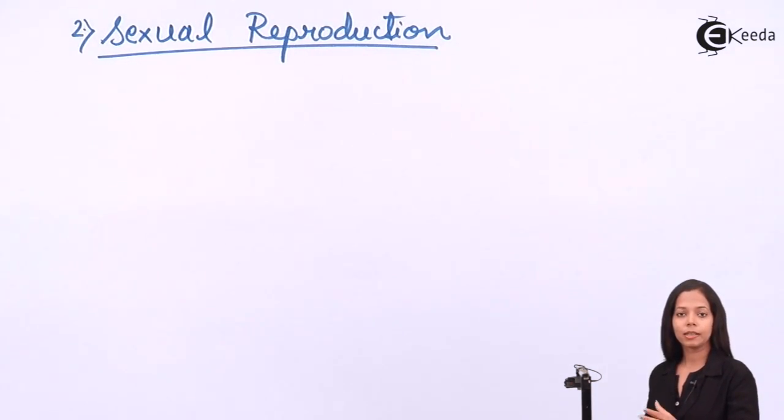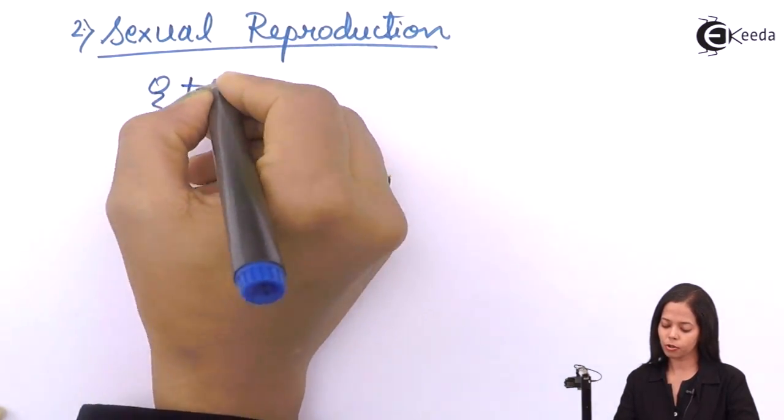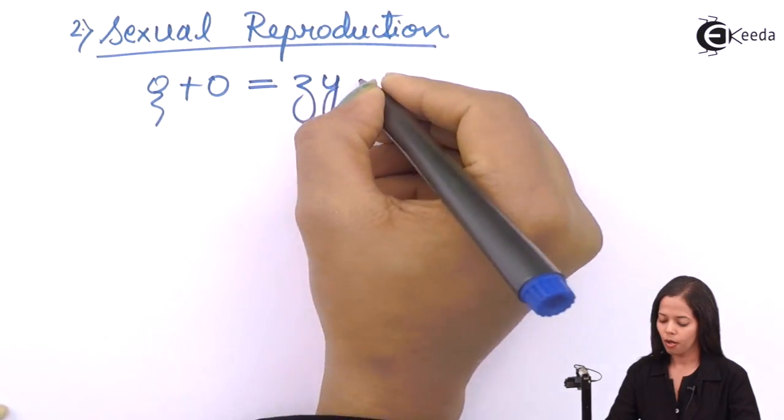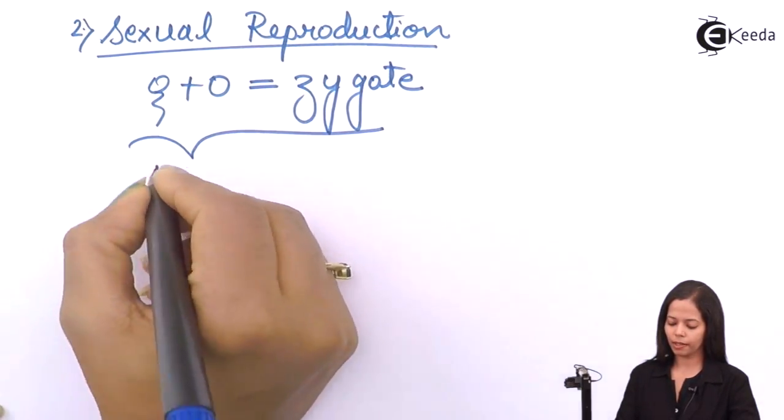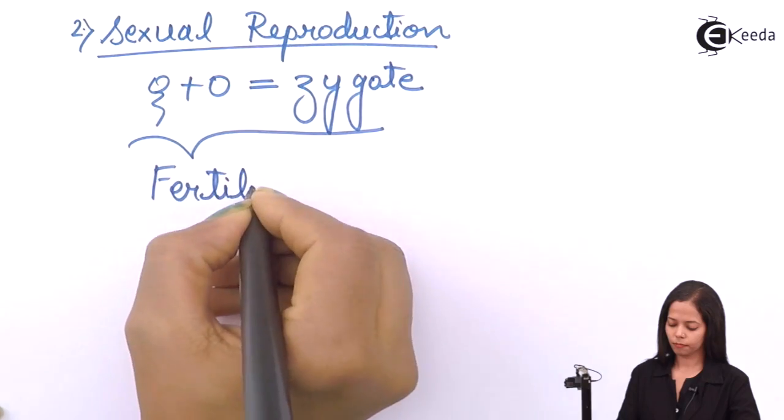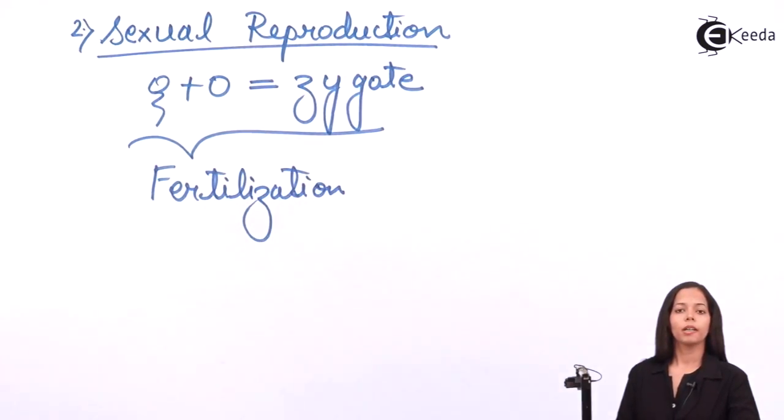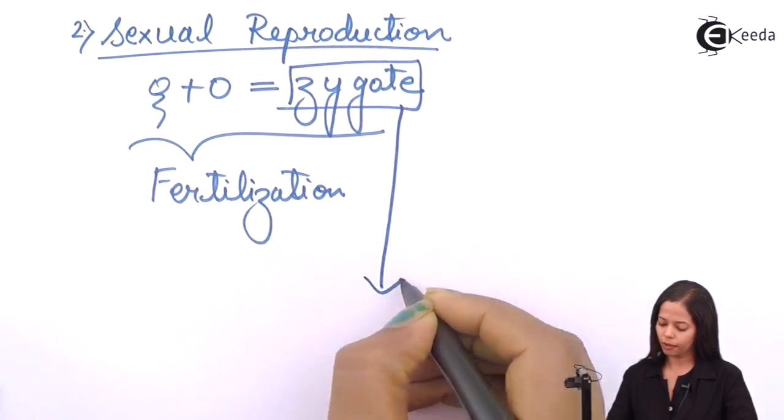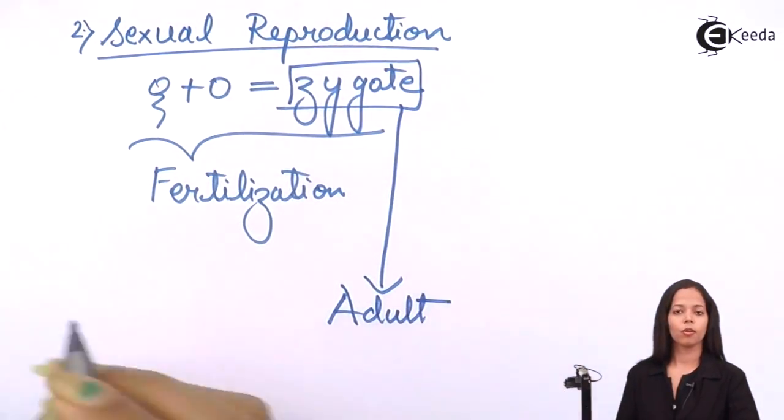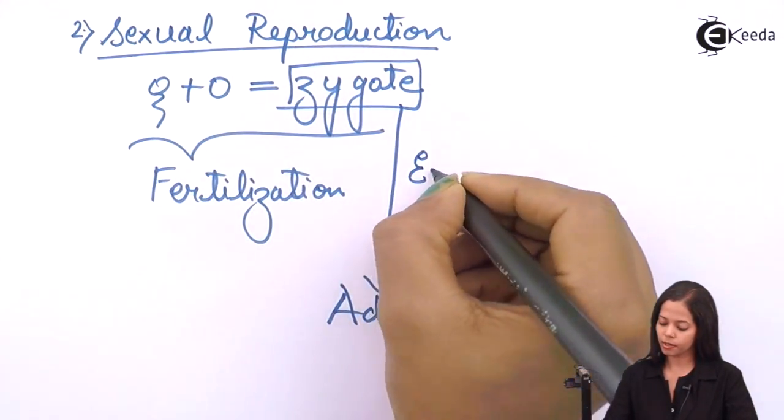In case of protista, this is sperm, this is ovum. It is getting fused to form the first cell of life, the zygote. After zygote, there is one more stage before baby is formed, the embryonic stage. But in case of protista, the zygote directly gets converted into adult. Which stage is missing? Embryonic stage is missing.